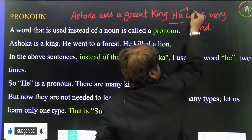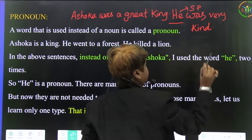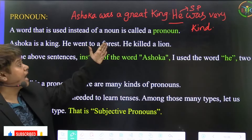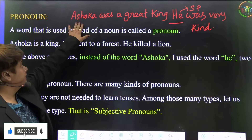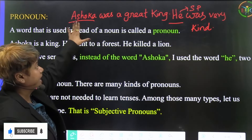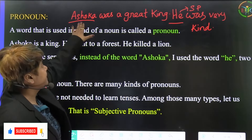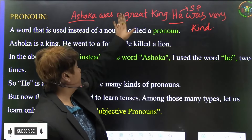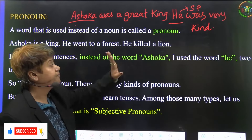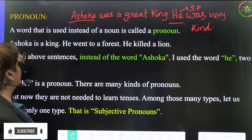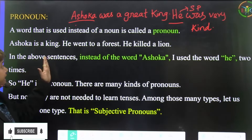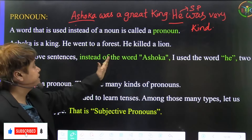So 'he' is the subject pronoun. A word that is used instead of a noun is called a pronoun. Ashoka is a name — that is a noun. So instead of Ashoka, we are using 'he'. Therefore, 'he' is the pronoun.